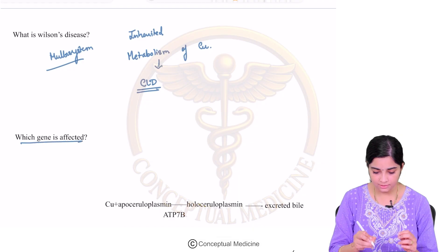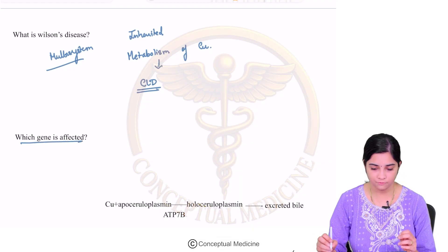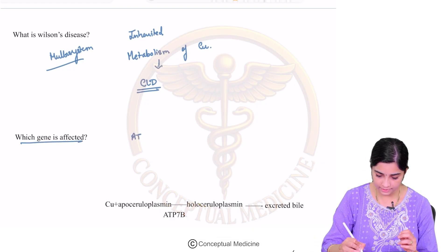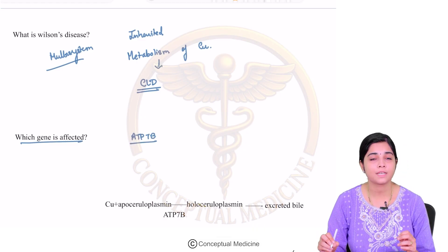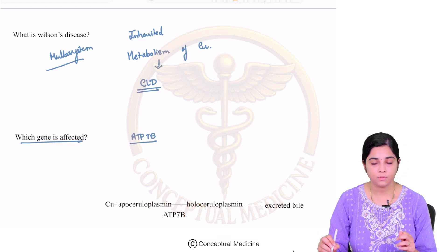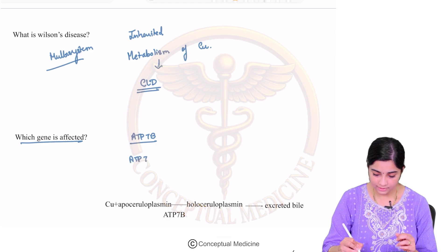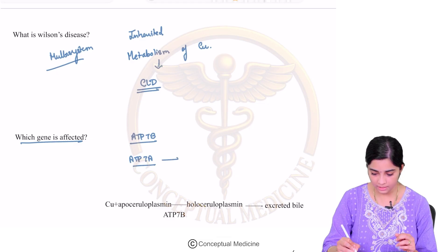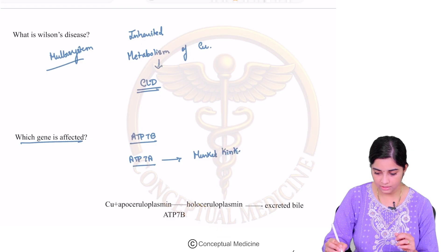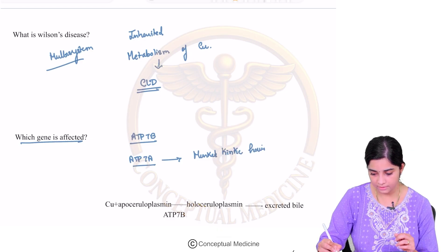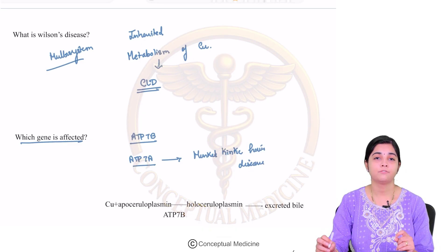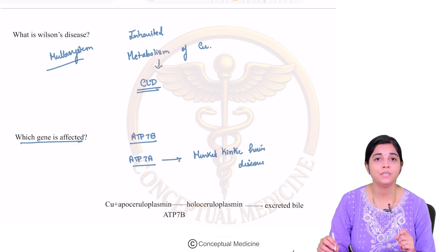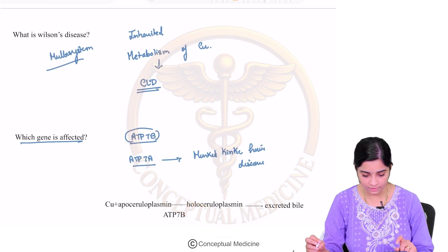Which gene is affected? It is your ATP-7B gene. Where have you heard ATP-7A? There is another gene which is ATP-7A, and this is associated with Menkes Kinky Hair Disease. You have to remember here that Wilson's disease is a defect or problem with the ATP-7B gene.